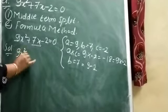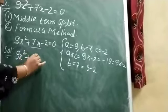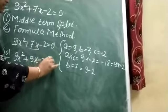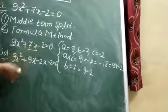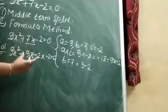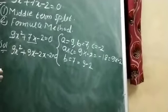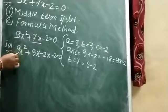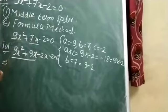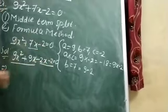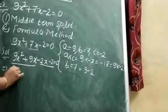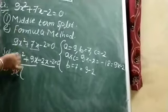Now, 9x² + 9x - 2x - 2 = 0. Instead of writing 7x, I am writing here 9x - 2x. Now we are taking common from these two numbers and these two numbers. I am taking 9x common here.